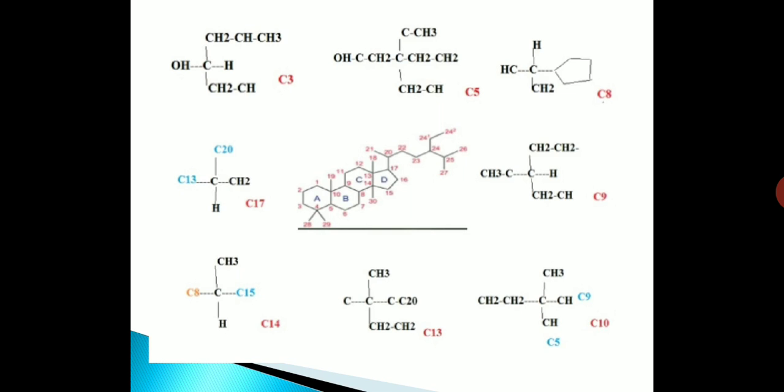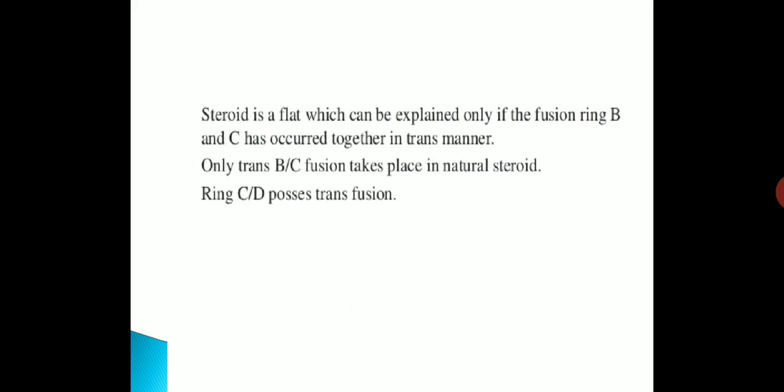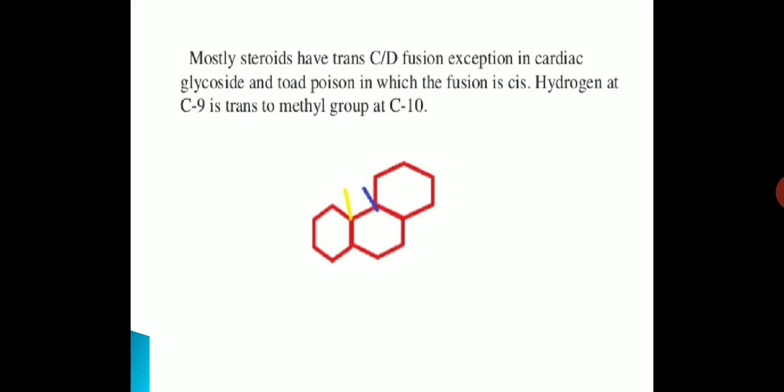Here I have shown different types of structures. Steroids are flat, which can be explained only if the fusion of rings B and C has occurred in a trans manner. Only trans BC fusion takes place in natural steroids. Rings CD possess trans fusion. Mostly steroids have CD trans fusion; an exception is in cardenolides and toad poisons, in which the fusion is cis.